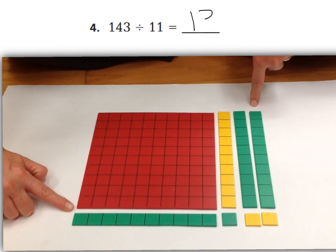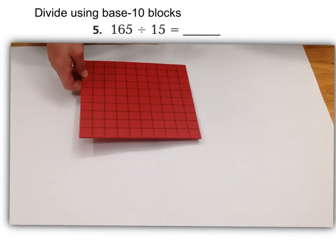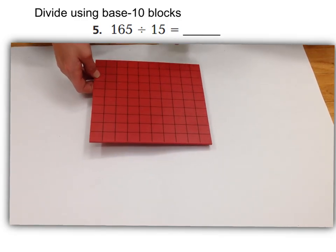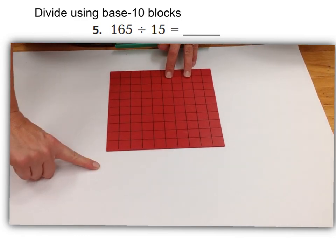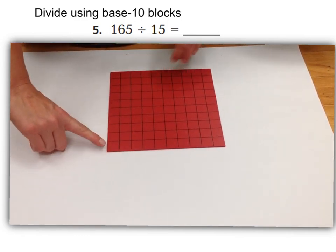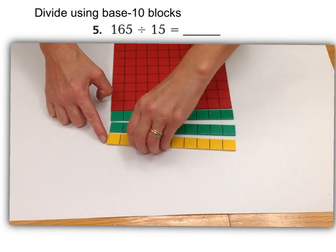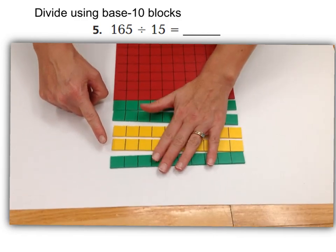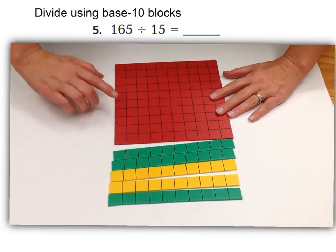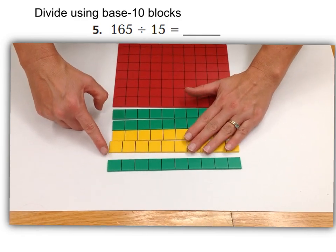Let's go ahead and write 13 right up here in our book. So for this one, this is going to be 165 divided by 15. Again, we want to create 15 going on this side of my array. So we have 10, 11, 12, 13, 14, and 15. As you can see, we have 10, 11, 12, 13, 14, 15.